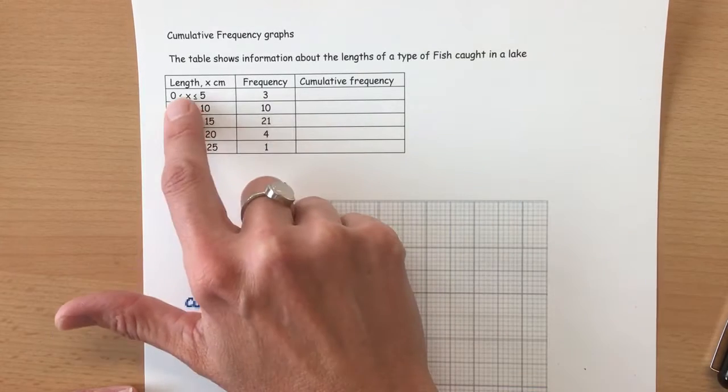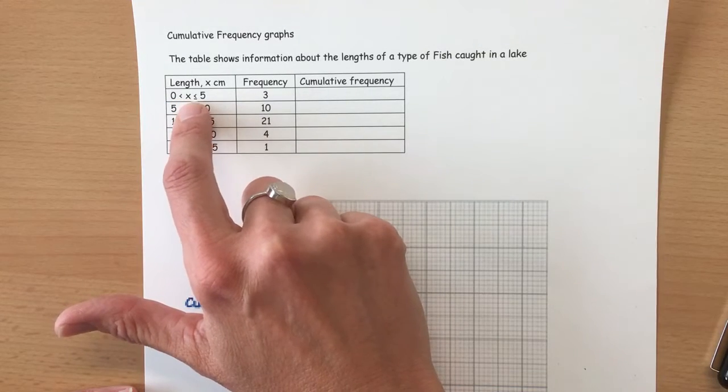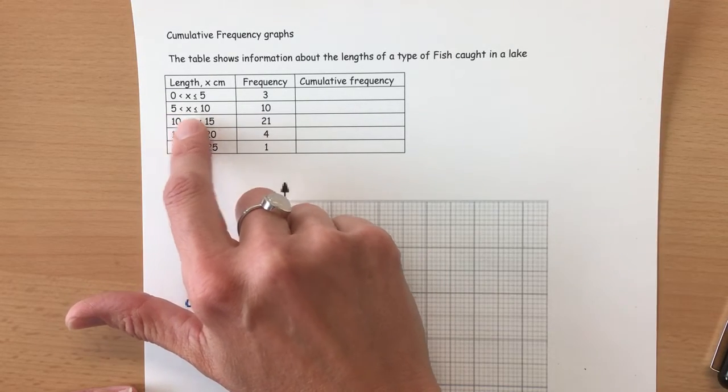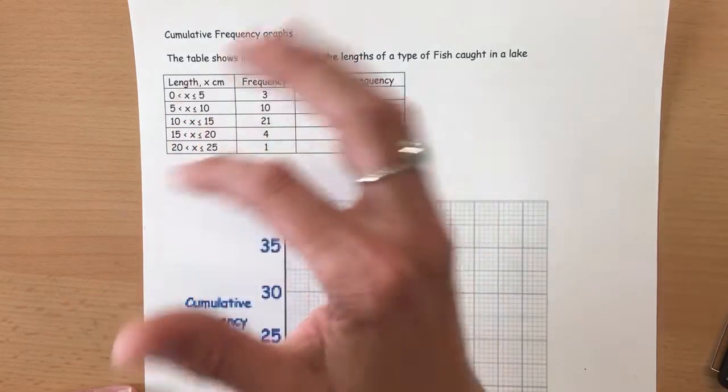There are three fish that are between zero, greater than zero but less than or equal to five, and there are ten fish that are greater than five centimeters but less than or equal to ten centimeters and so on.